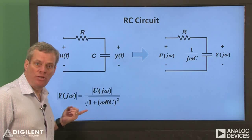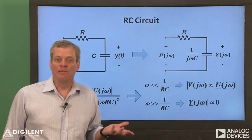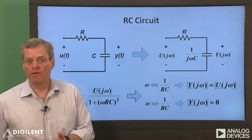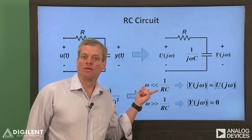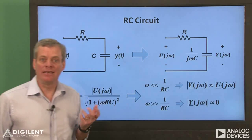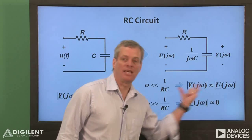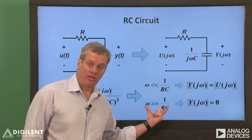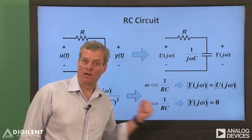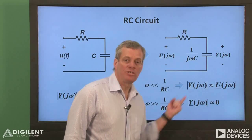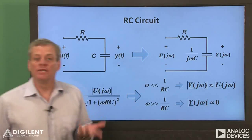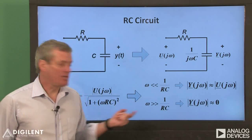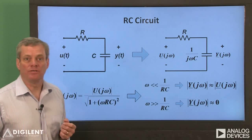We'll just look at the limiting cases of the effects of this magnitude response at low and high frequencies. If the input frequency is much less than 1 over RC, the output amplitude is almost the same as the input amplitude. However, if we apply a signal whose frequency is much higher than 1 over RC, the output amplitude is approximately zero. This circuit is behaving like a low-pass filter — it's passing low frequency signals and stopping high frequency signals.